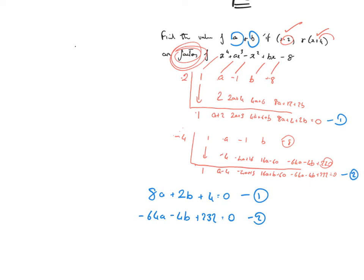Okay, so I'm going to get rid of b's here. I'm going to multiply the top equation by 2. Okay, so that's going to give me 16a plus 4b plus 8 equals 0. New equation, call it equation 3. The signs are different. So, I'm going to add the equations. 2 plus 3.